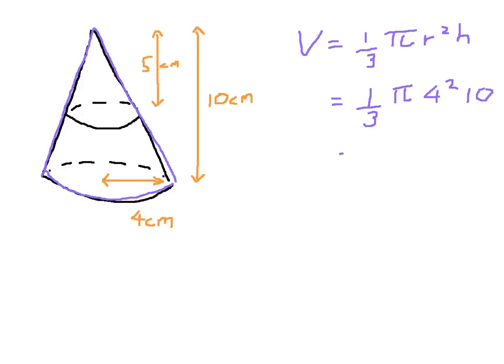Okay, now I'm just going to leave this in exact form, but if I find the area of that, four squared, sixteen, times ten, it's one hundred and sixty over three pi. So that's the volume of the whole cone.